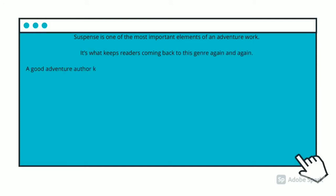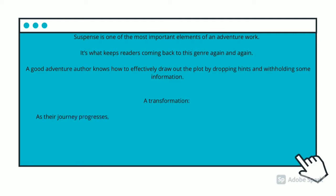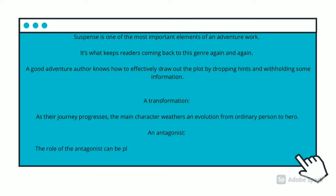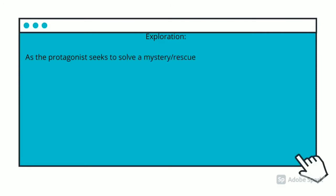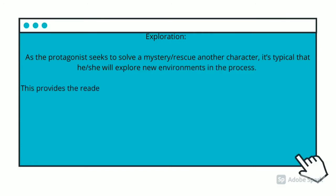A good adventure author must effectively draw out the plot by dropping hints and withholding some information. As the journey progresses, the main character undergoes an evolution from an ordinary person to a hero. The role of the antagonist can be created by groups or physical objects. As the protagonist seeks to solve a mystery or rescue another character, they will explore new environments in the process.